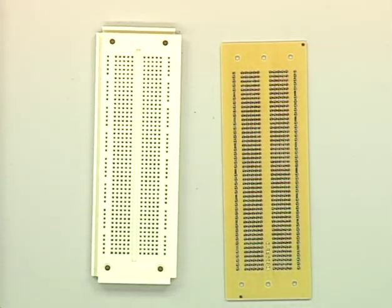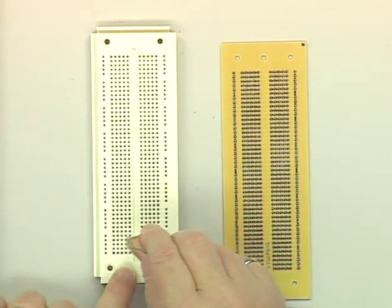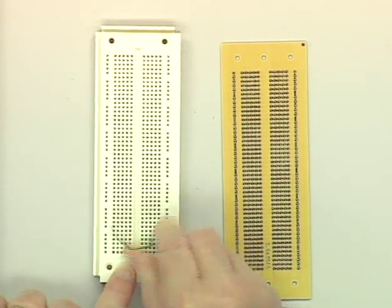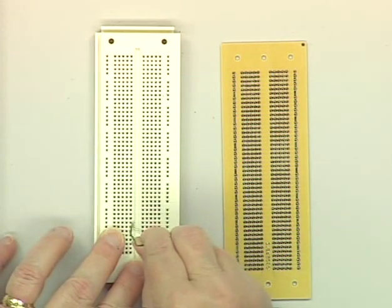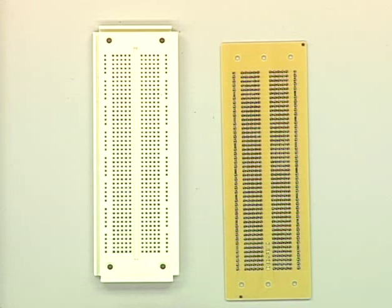So when we want to make a connection, we stick the ends of the elements into the holes. And they'll go into the holes and stay there. And that's how we connect things together. If we want to connect two things together, they have to have a node in common.